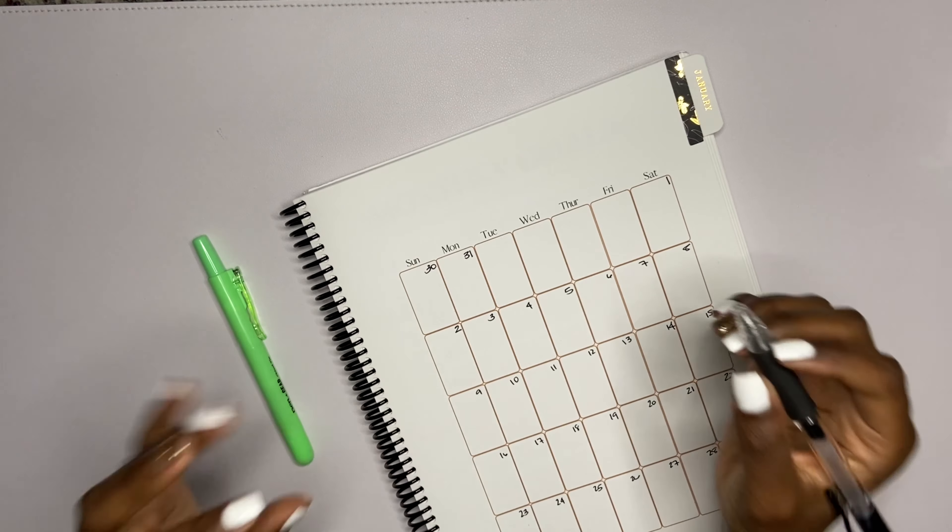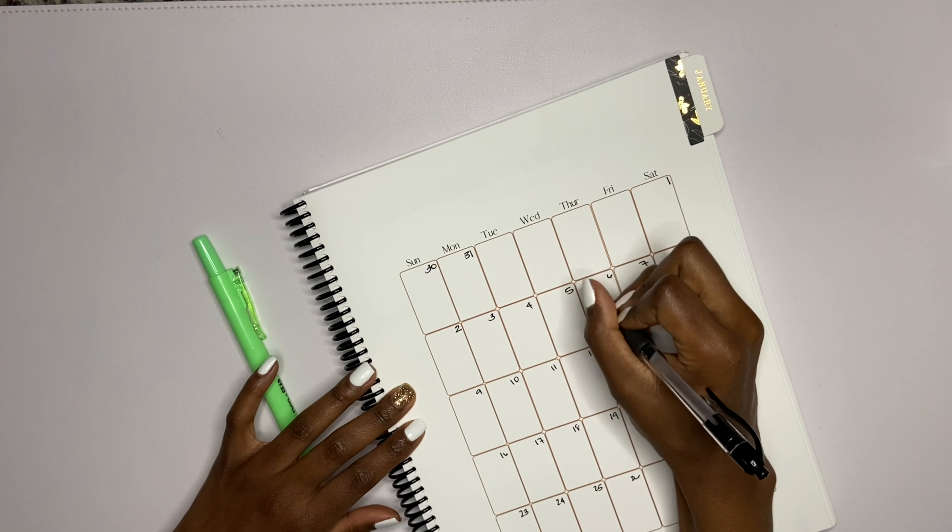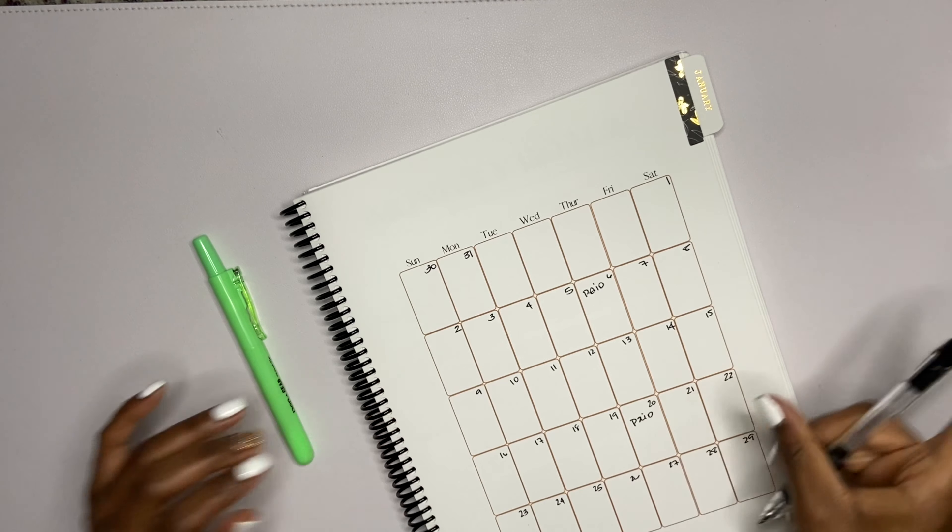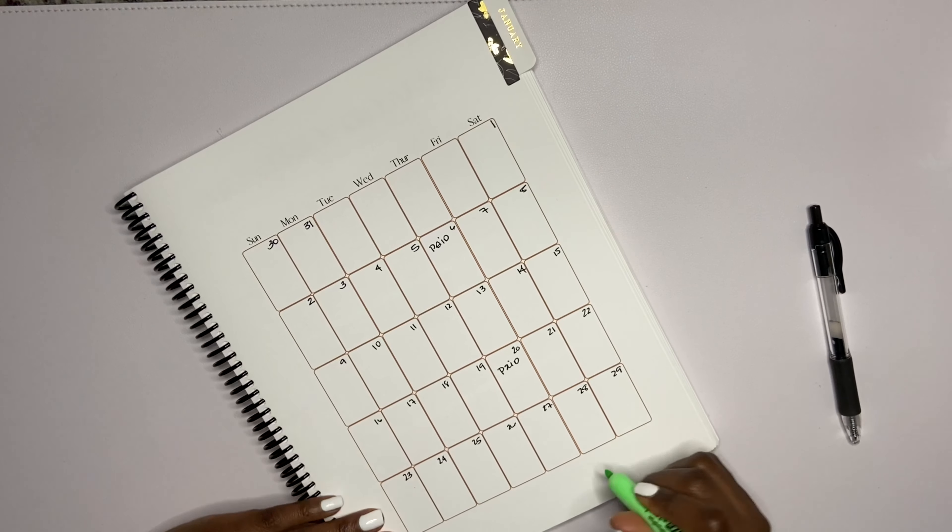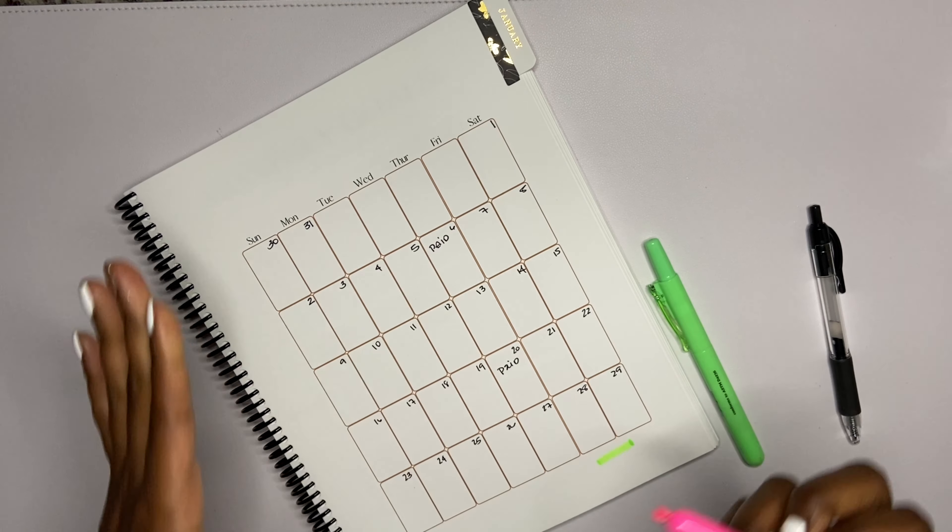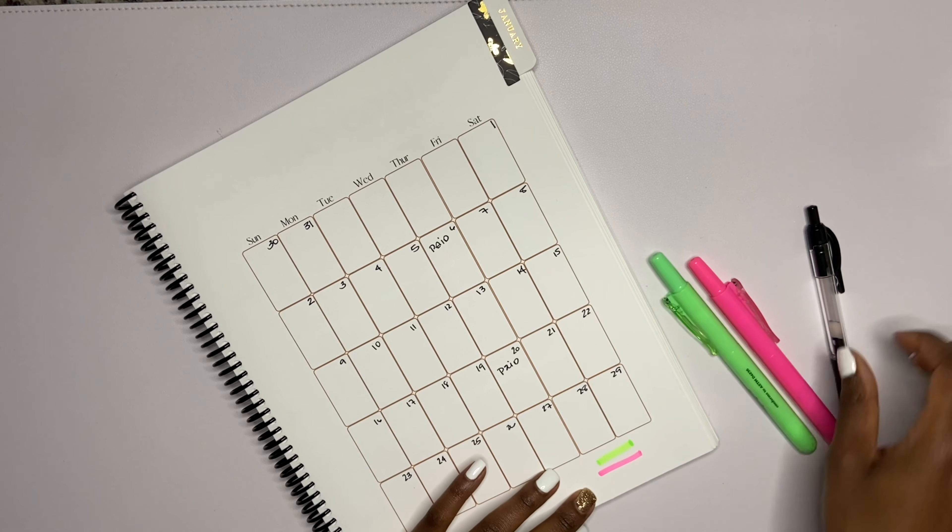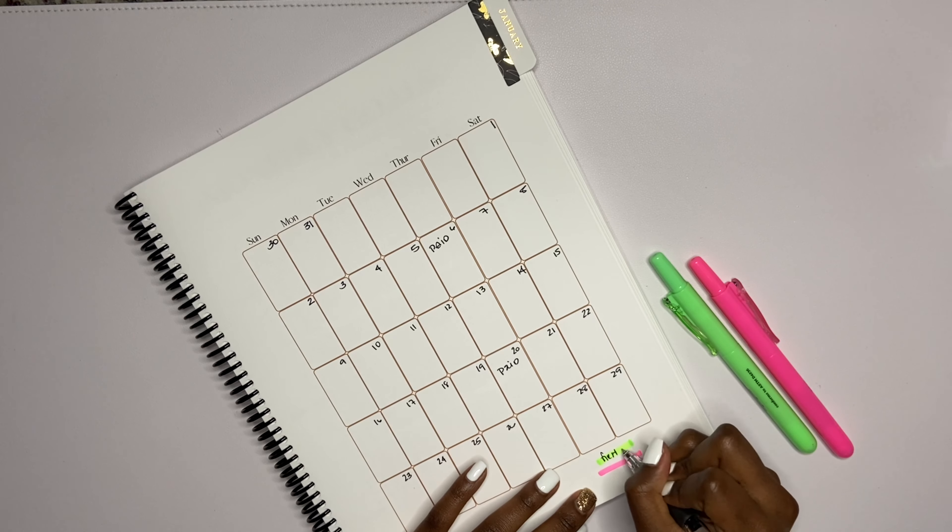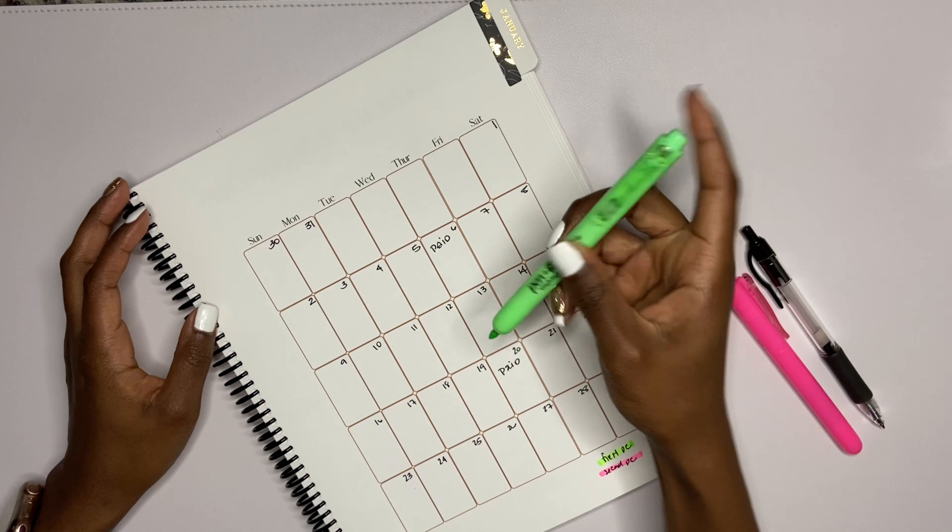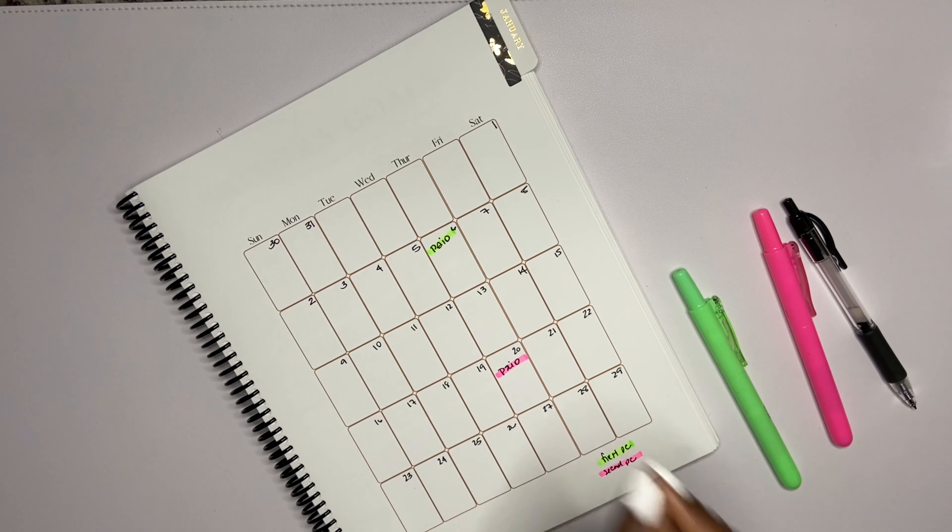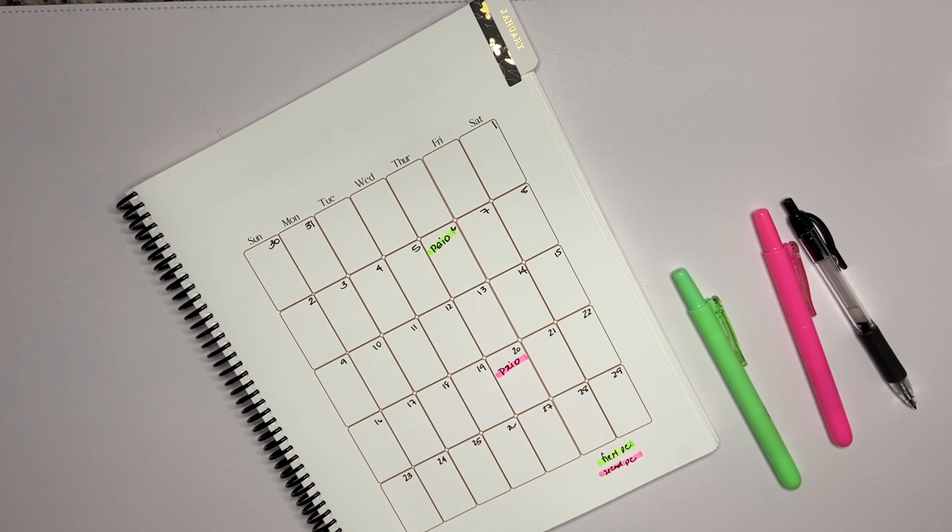I get paid for my full-time job on Thursdays, so it'll be this Thursday. I'm gonna mark paid and paid. Let's put down here which is which. I noticed that a lot of people organize their checks based off which one is highlighted, and I'm thinking I want to start doing that. So I'm gonna say first paycheck and second paycheck. First is gonna be green.